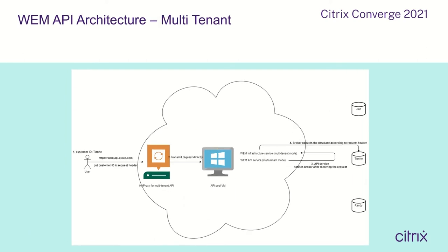Here is the WAM API architecture for multi-tenant mode. Suppose we have three customers. The WAM API service is in multi-tenant mode and will use API pool virtual machines. When customer Tienhe wants to access the server, it will use a URL that includes the customer ID and access through the HTTP proxy. Traffic will then route to the API pool virtual machines. The API service will notify the broker after receiving the request, and the broker will update Tienhe's database based on the request handle.